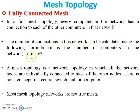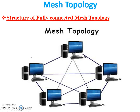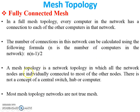The number of connections in this network can be calculated using the equation n(n-1)/2. It means if n equals 5, so there are 5 computers, then the number of connections is 10. You can see here there are 5 computers, and as per the given equation the number of connections is 10.